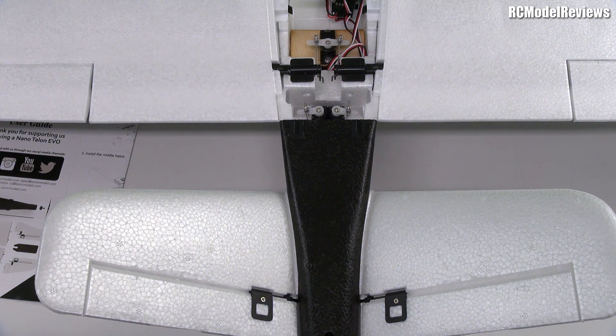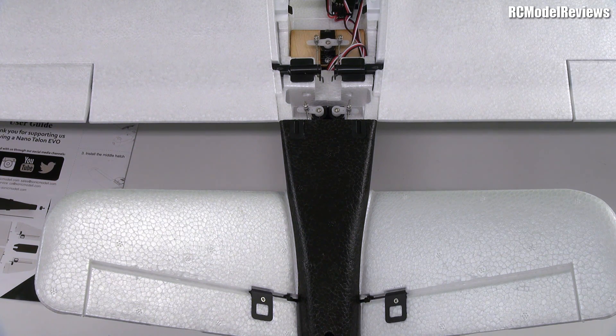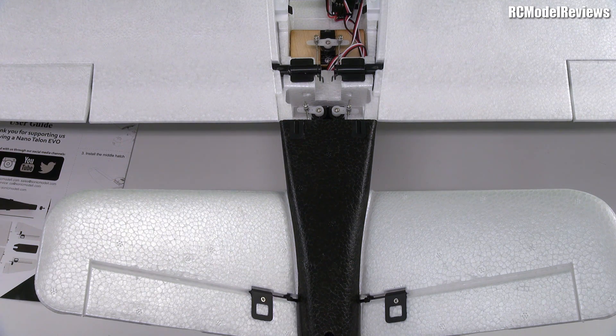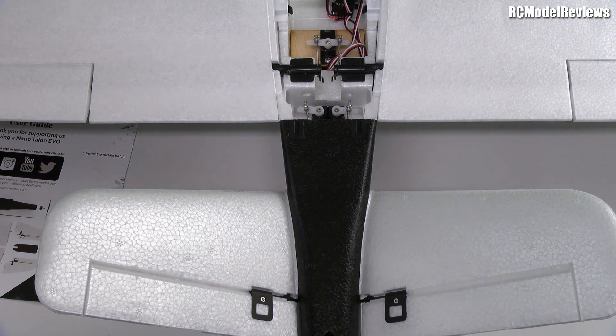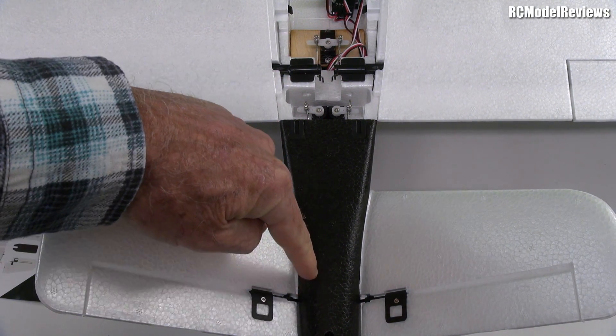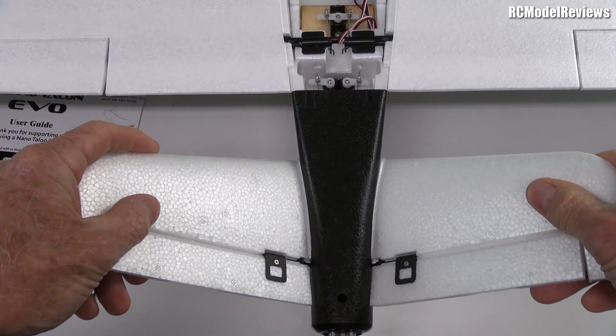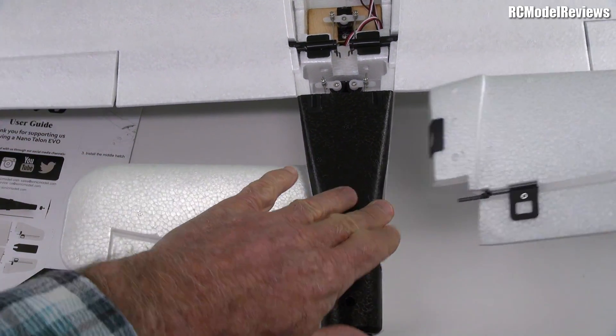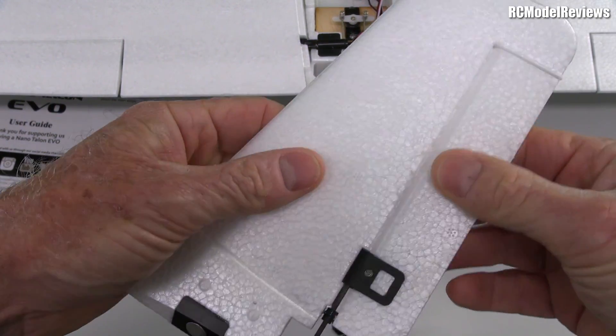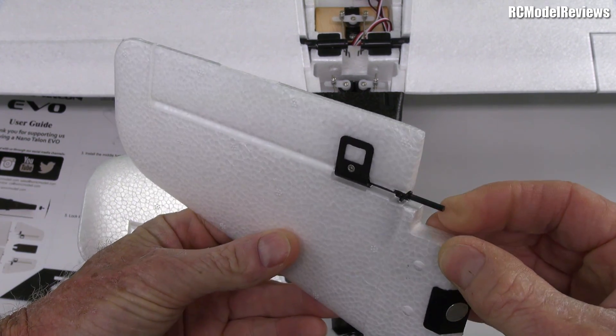So as we know the elevators don't move here when the servos move and one astute viewer put in the comments he thinks it's the pushrods bending and you know what I agree with him because there are just simple wire pushrods between these servos and the arms on the torque rods down here. These are awfully stiff and I think that's the problem because the foam here is too thick and I can barely move those with my fingers on those tiny little torque rods.